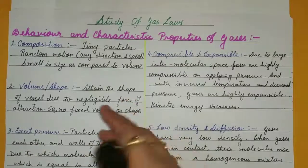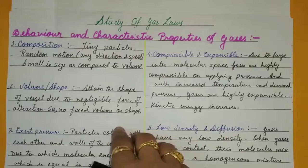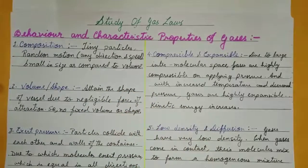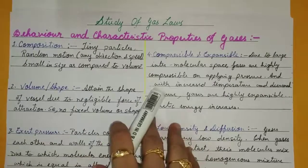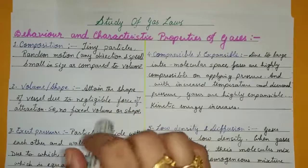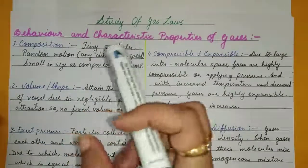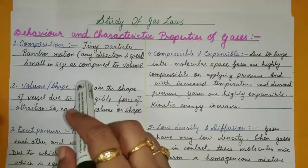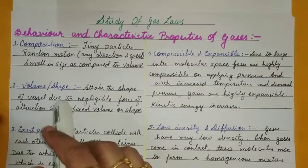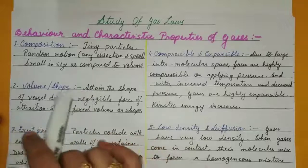The particles of a gas are in constant random motion, so they possess kinetic energy. The average kinetic energy of a particle in a gas is directly proportional to its absolute temperature. When temperature is increased, motion increases because particles gain kinetic energy. If you decrease temperature, motion decreases. If temperature is zero, motion ceases — that is a very theoretical concept.